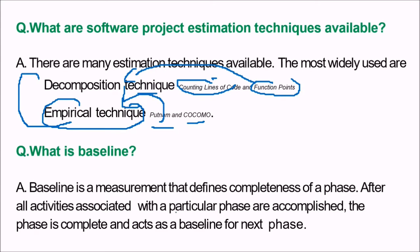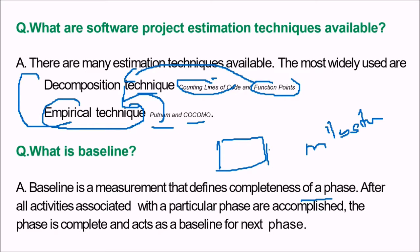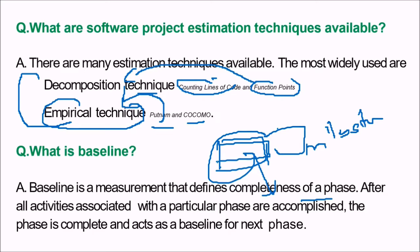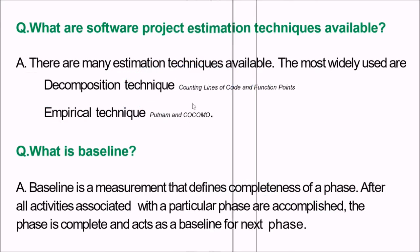What is a baseline? The baseline is a measurement that defines the completeness of a phase — just like a milestone. After all activities associated with a particular phase are accomplished, the phase is complete and acts as a baseline for the next phase.